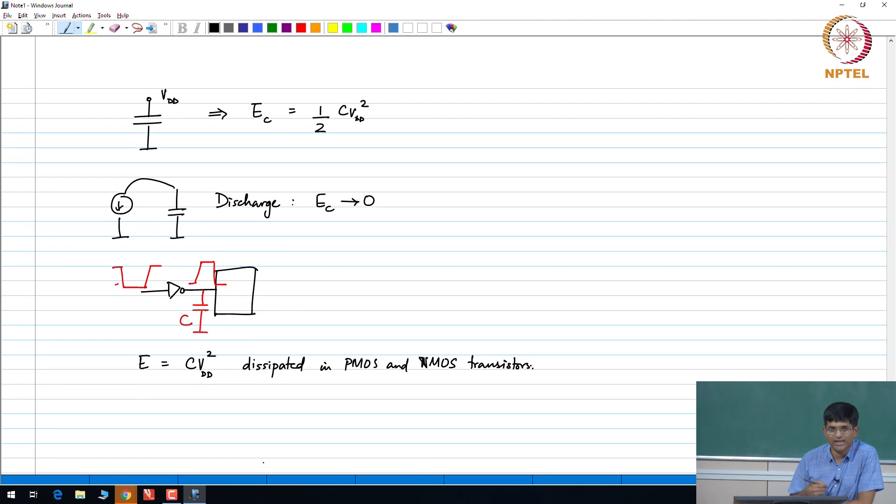So, every time the gate goes through an up and down cycle like this, we would find that C VDD squared is dissipated. If the gate then has some f cycles per second, then we can multiply by the number of cycles per second in order to get the energy dissipated per second, which is nothing but the power.